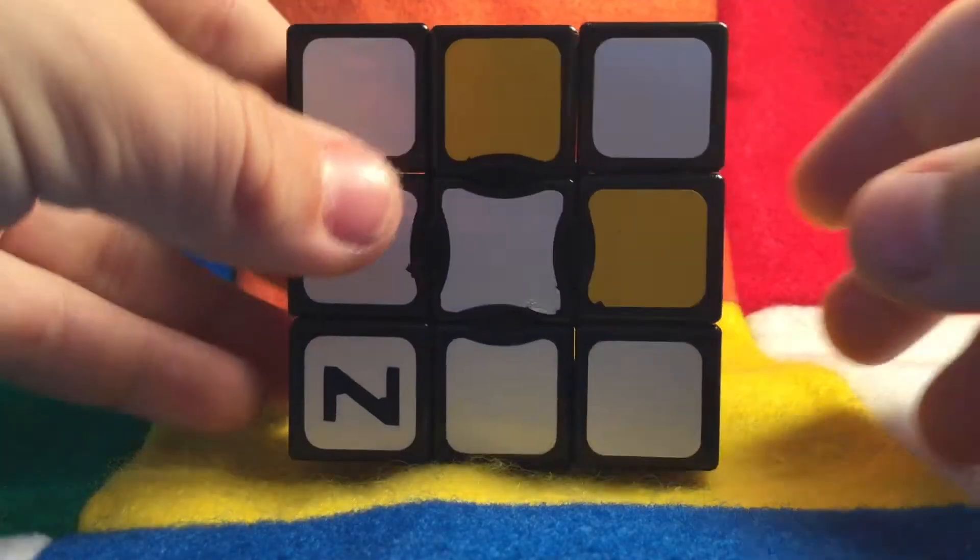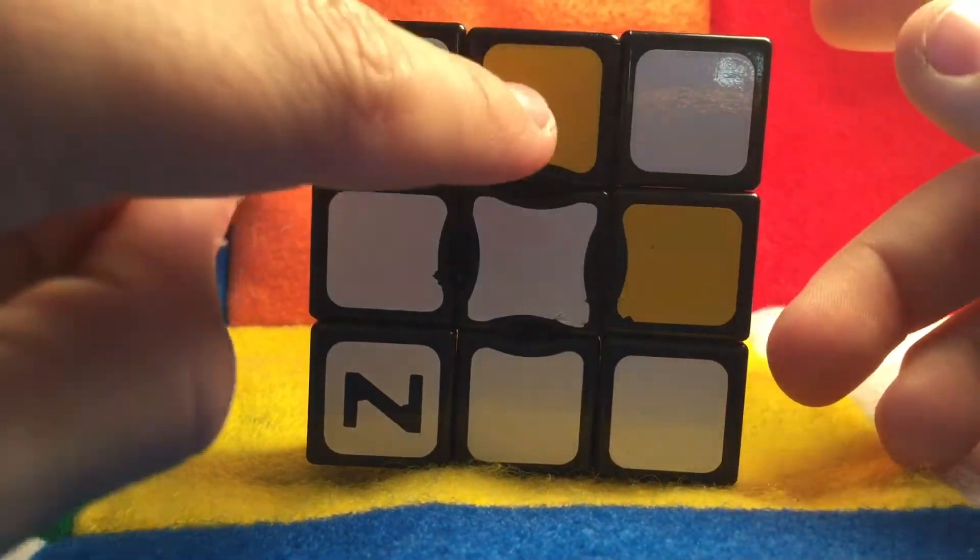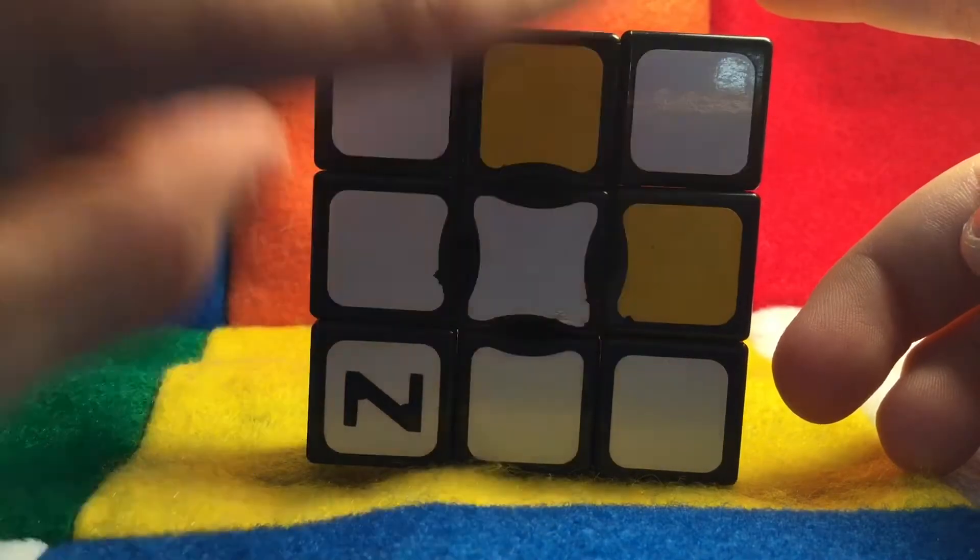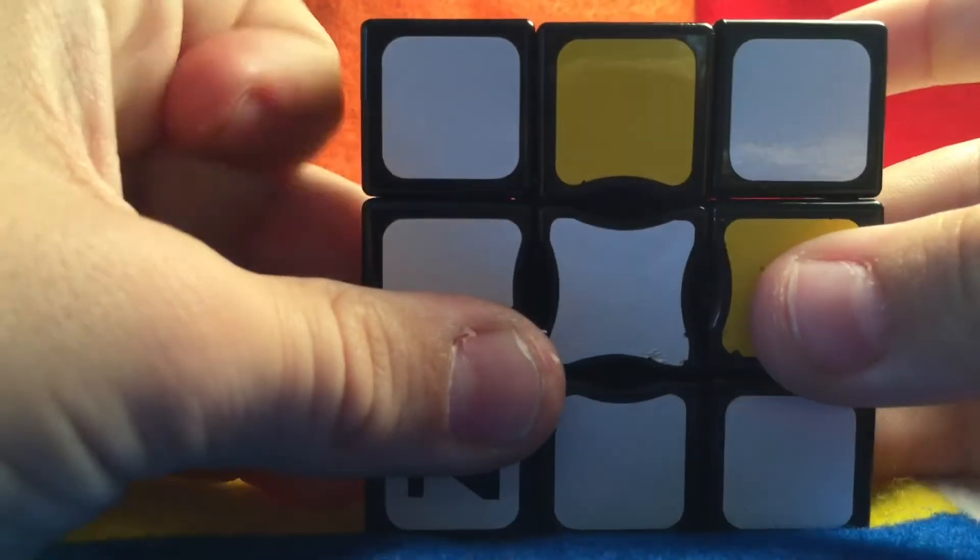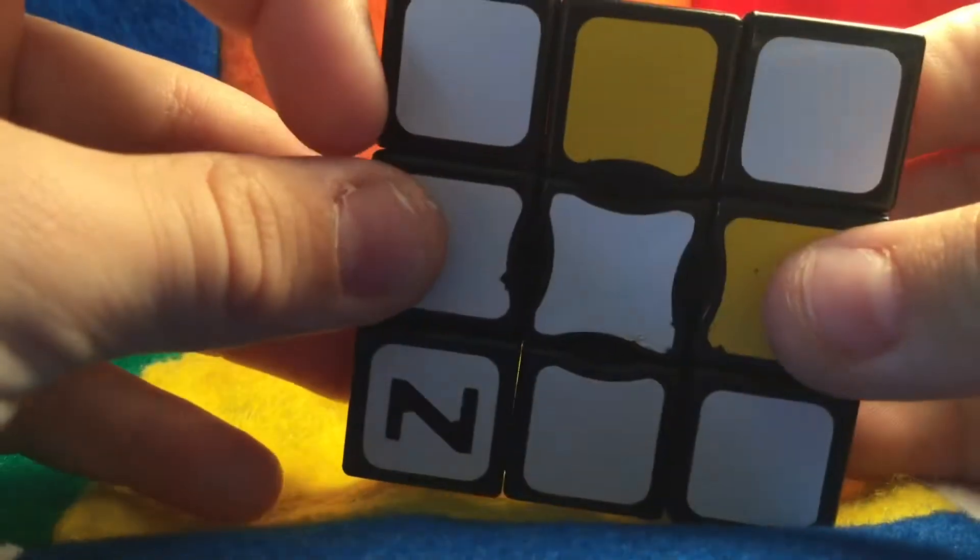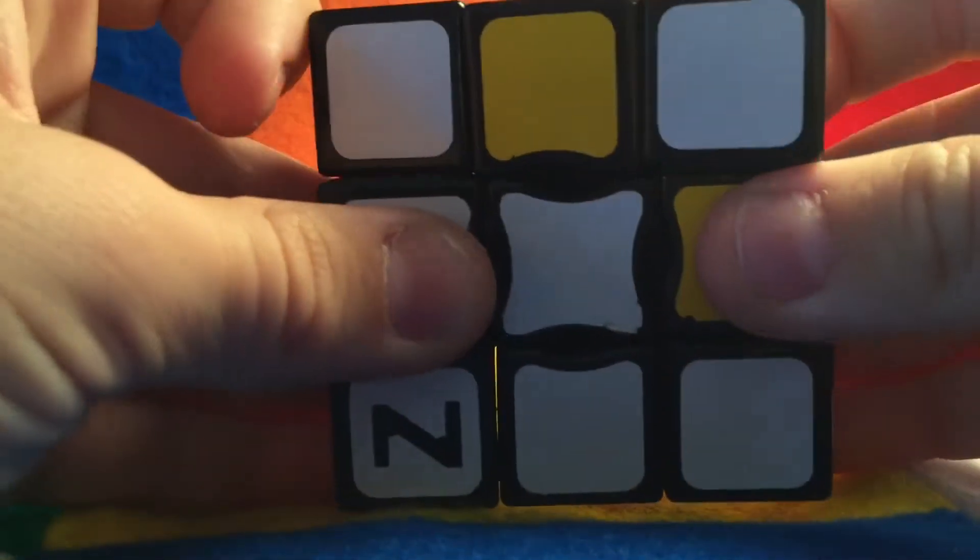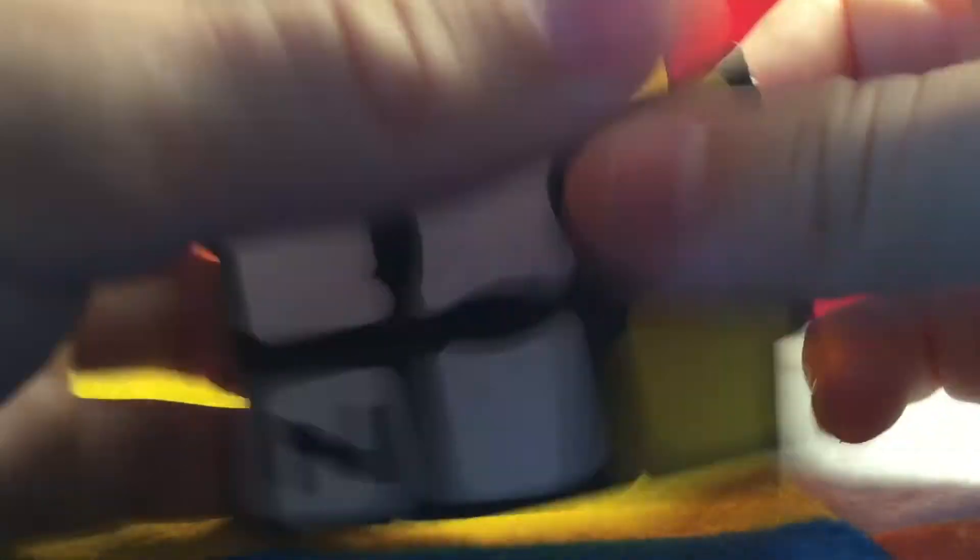Okay, now this last case is just like the other case, but it only has one of these angles switched like that. So what you are going to do for this is just going to do the same algorithm to solve this. And this algorithm is really simple. It is just left, down, left, down, left, and down. And your Z-Cube is solved.